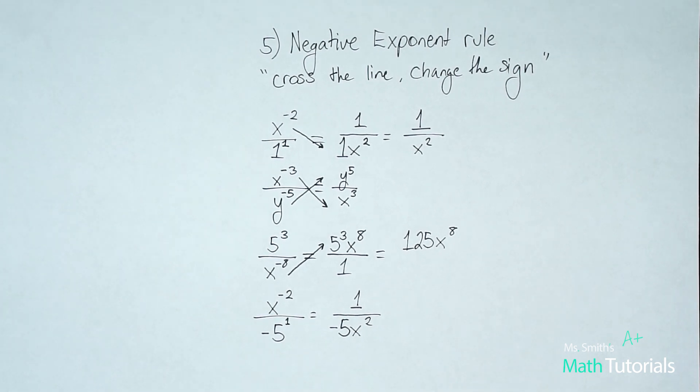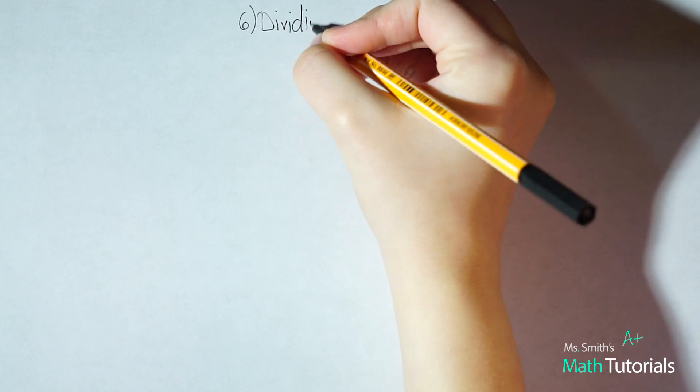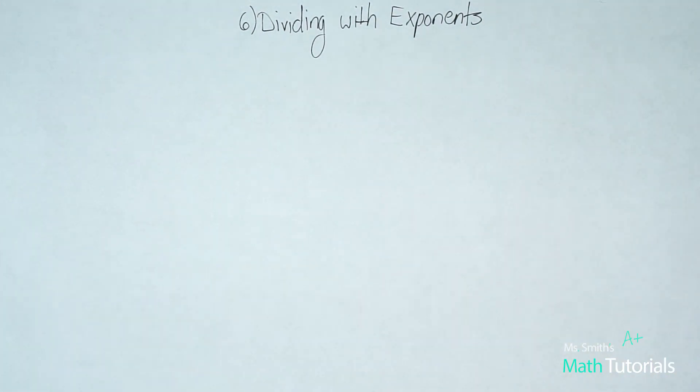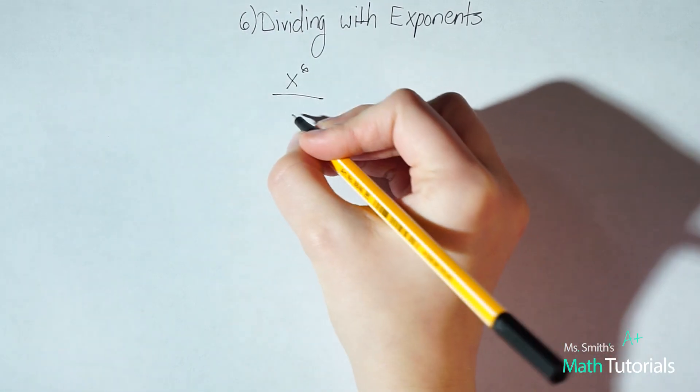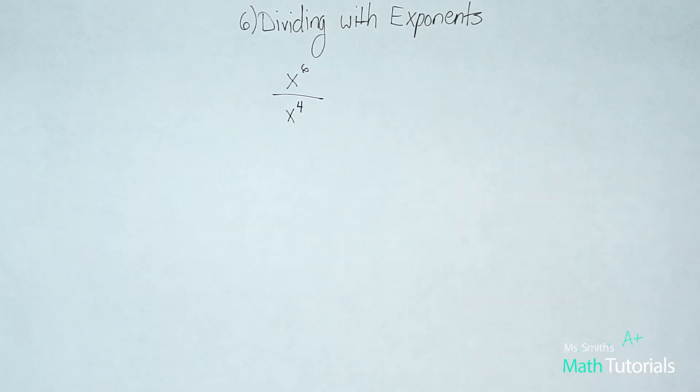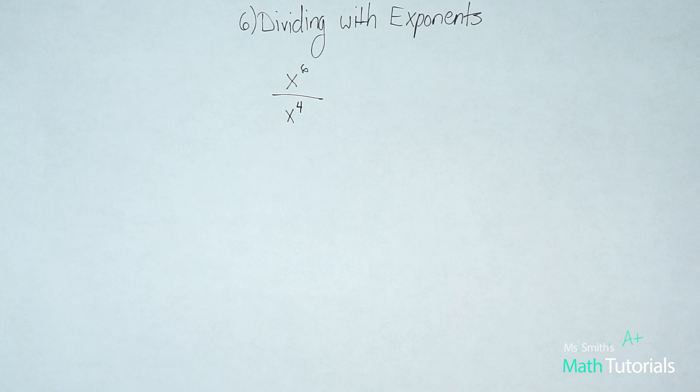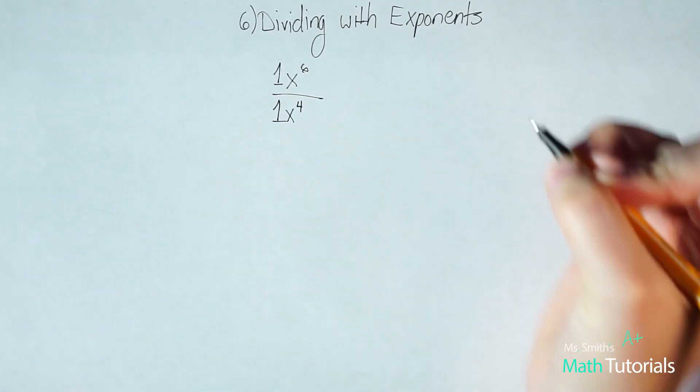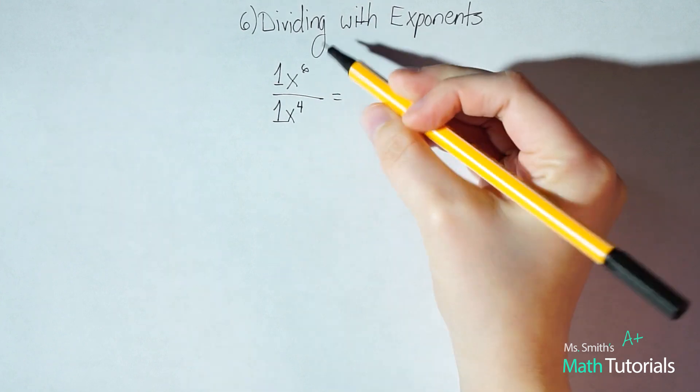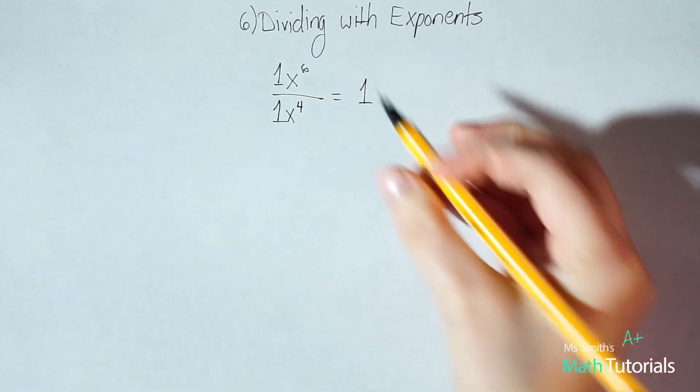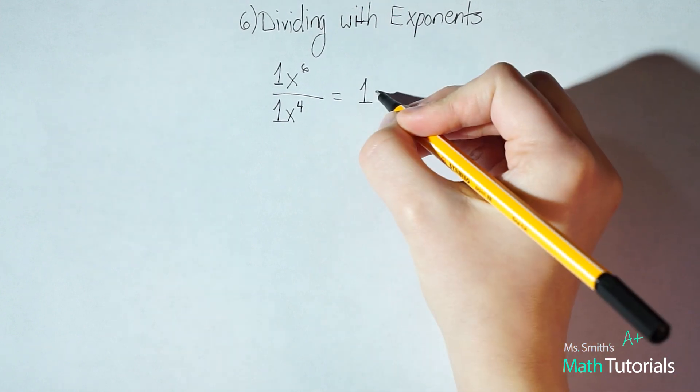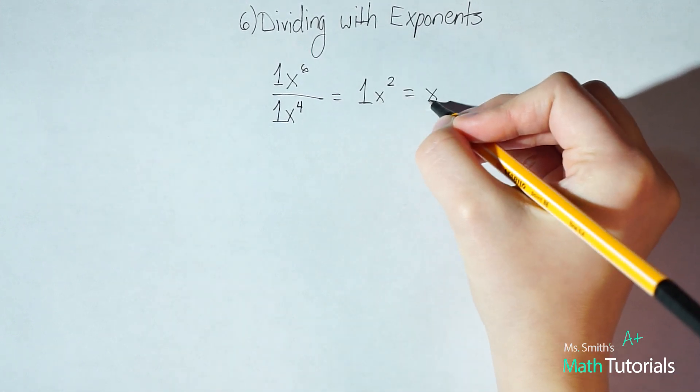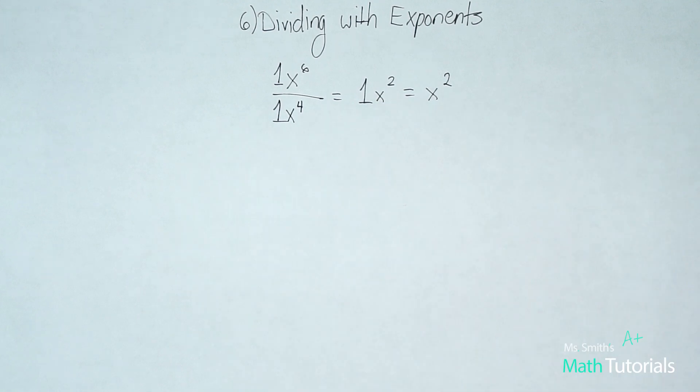Next, we're going to look at the dividing rule. Okay, the next rule that we're going to look at is dividing with exponents. And this rule basically says that anytime you divide with exponents, you subtract the exponents. So if given an example like x to the six divided by x to the four, first thing to understand is that there's an understood one in front of the variables. So we can combine our whole numbers. One divided by one is one. And then we have like terms here, x to the six divided by x to the fourth, six minus four is two. And we would write this as just x squared. We don't need to see the one in front of the x. It's understood.